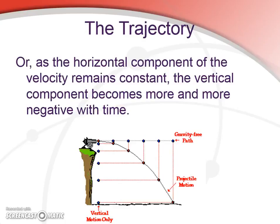And we can say that while the horizontal component remains constant motion, constant velocity, the negative component for our cannonball becomes more and more negative with time. It accelerates downward.